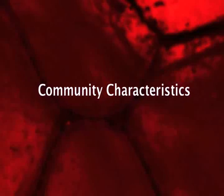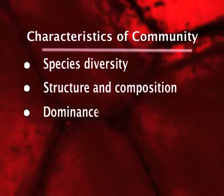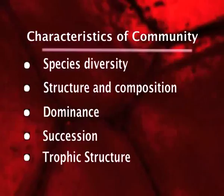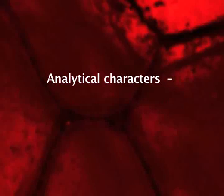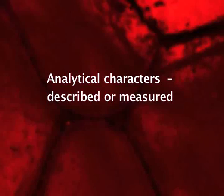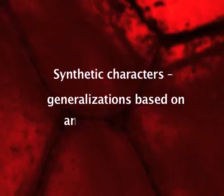Now let us talk about community characteristics. There are various characteristics of community such as species diversity, structure and composition, dominance, succession, and trophic structure. To study the details of these aspects of any community, a number of characters are taken into consideration. These various characters are broadly classified into two major categories: A. Analytical characters, and B. Synthetic characters. Analytical characters are those which can be either described or measured, while synthetic characters are generalizations based on analytical characters.